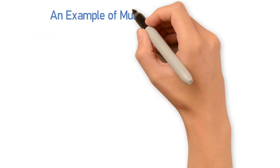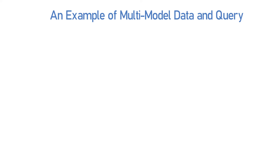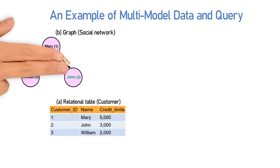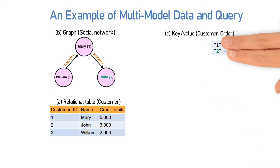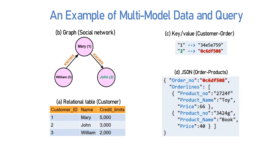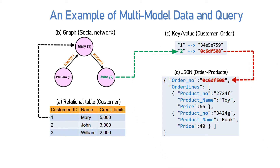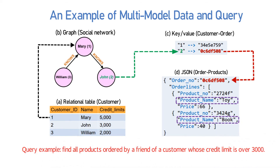Consider the following query example which includes a customer table, a social network graph, some key-value pairs, and a JSON document. In this example, there is a customer called Mary. Mary has a friend called John, and John made an order consisting of two products: a toy and a book. Suppose we want to find all products ordered by a friend of a customer whose credit limit is over 3000. To answer this query, we need to integrate these four types of data in a multi-model database.